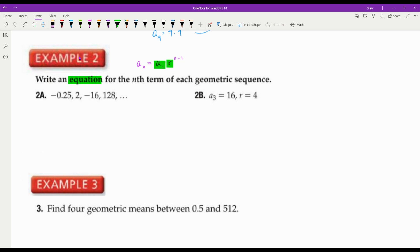How do I find r? I take one term and put it over the one that comes before it. So you can do 2 over negative 0.25, but you can also do negative 16 over 2, which is a little bit easier because a lot of people mess up if they're going to divide 2 over a fraction or decimal. But you all have a calculator. So negative 16 over 2 gives me r equals negative 8. So my formula, A sub n, my A sub 1 is negative 0.25, and my r is negative 8. You leave it just like that.